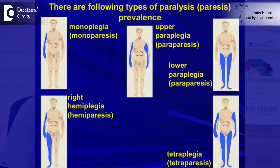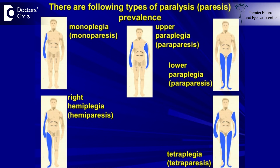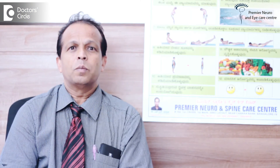We say monoplegia when one limb is involved. If two limbs on one side of the body are involved, it is called hemiplegia. If only the face and one limb, like face and upper limb, it is called faciobrachial paralysis. If both the legs — that means the lower limbs — are involved, it is called paraplegia. If all four limbs, that is both the upper limbs and lower limbs are involved, we call it quadriparesis or quadriplegia.